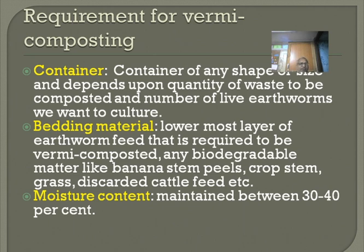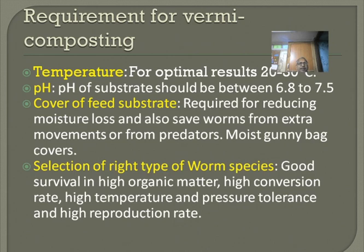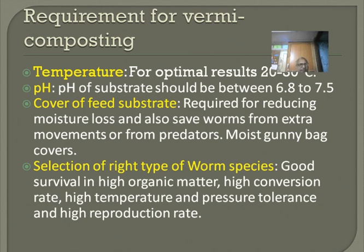Moisture content should be maintained between 30 to 40%. For optimal results, a temperature of 20 to 30 degrees Celsius is required. The pH of the substrate should be between 6.8 to 7.5. A cover of feed substrate is required for reducing moisture loss and to protect from predators; moist gunny bags are generally used. The selected worm species should have good survival in high organic matter, high conversion rate, high temperature and pressure tolerance, and high reproduction rate.